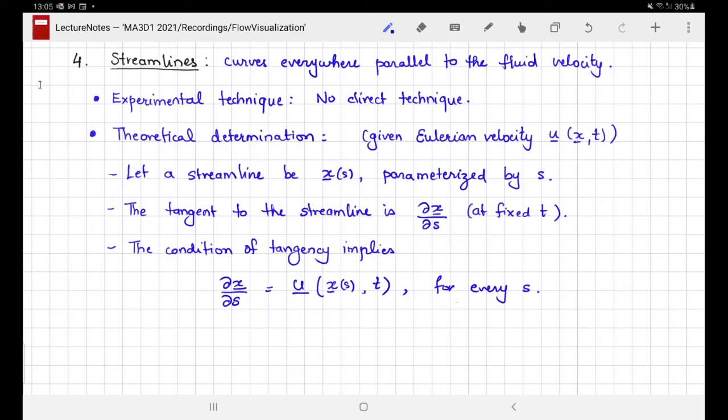The final visualization technique we are going to look at are the streamlines. Streamlines are curves that are everywhere parallel to the fluid velocity. Because this is a mathematical definition of a curve, it is very hard to realize streamlines in a physical flow. Therefore, the experimental techniques in general for visualizing streamlines do not exist. What they amount to is basically applying the method for theoretically determining the techniques after measuring the Eulerian velocity of the fluid in some way.